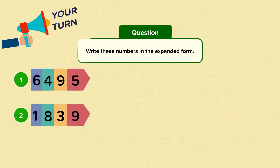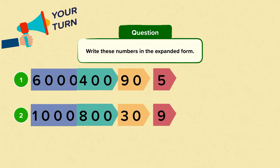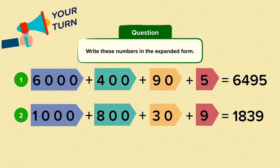Your turn now. Can you write these numbers in the expanded form? Just remember, you don't need to draw the arrow cards, just write the numbers. Pause the video and have a go. Well done. For number one, you got six thousand plus four hundred plus ninety plus five equals six thousand four hundred and ninety-five. And for the second one, you got one thousand, add eight hundred, add thirty, add nine equals one thousand eight hundred and thirty-nine.